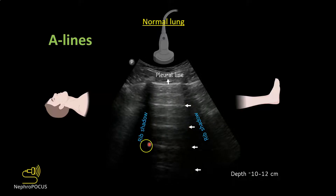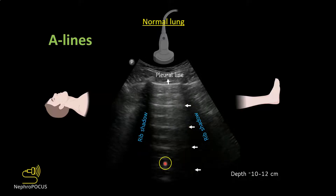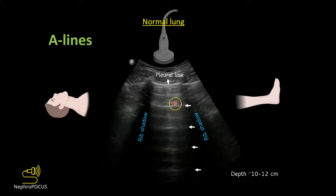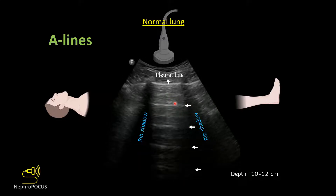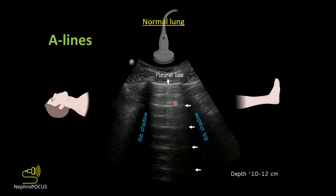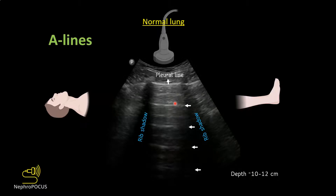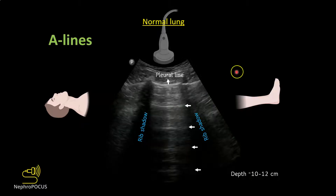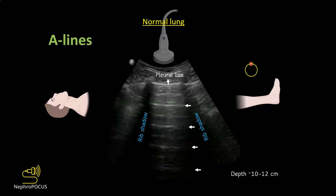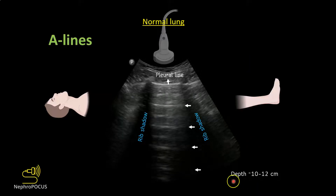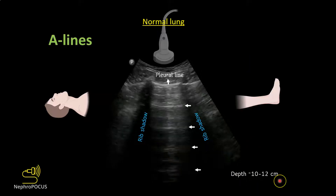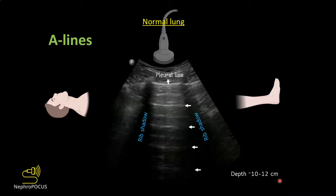These horizontal bright lines, which are essentially reflections of the pleural line, are the A lines. When you see A lines it's normal lung. When you are looking for these artifacts, make sure that you have a depth of at least 10 to 12 centimeters.